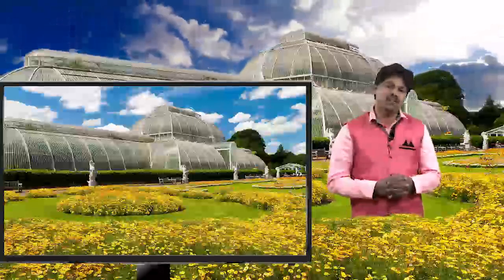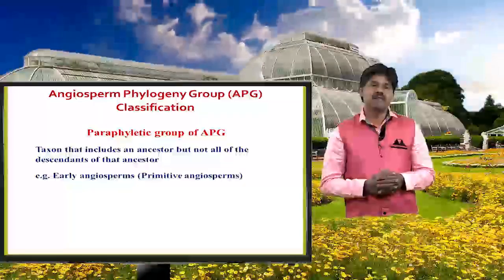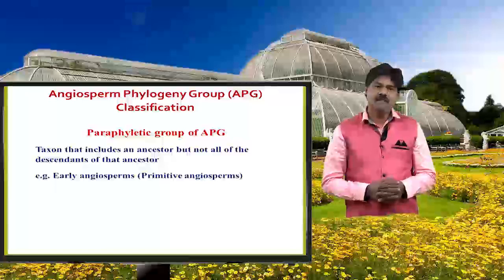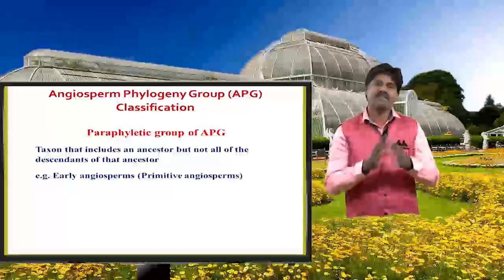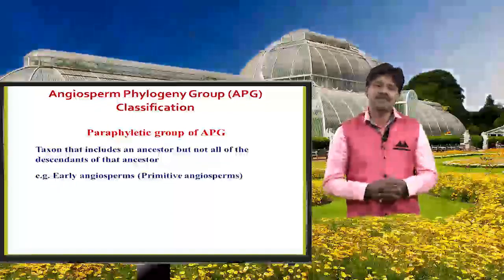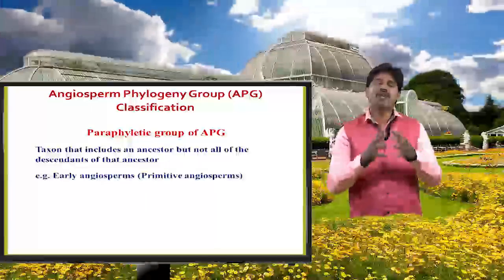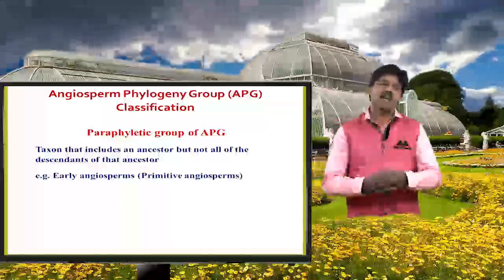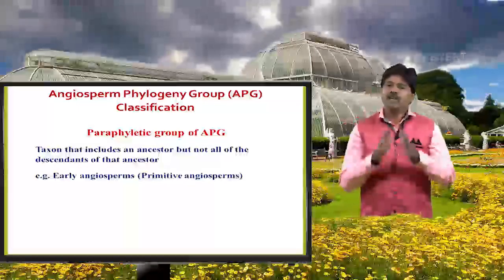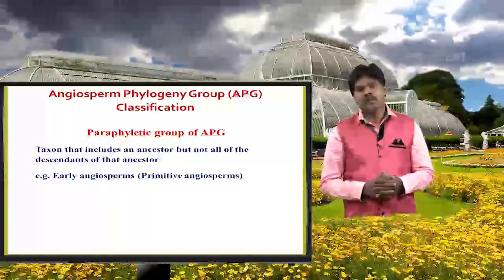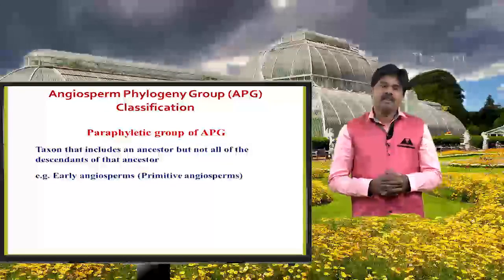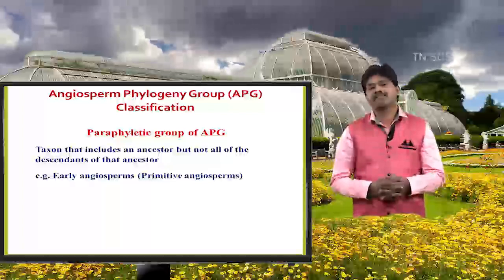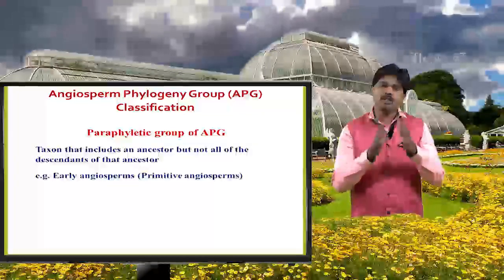What about the remaining plants? The remaining plants are grouped as early angiosperms. So in APG classification, there are three important clades: first is early angiosperms, which is paraphyletic; second is monocots; and third is eudicots. Monocots and eudicots are monophyletic, and early angiosperms are paraphyletic. Paraphyletic means taxa which include the ancestor but not all the descendants of that ancestor.